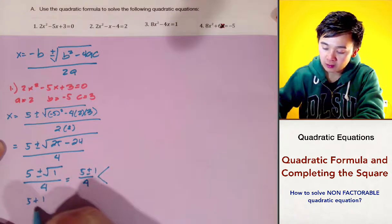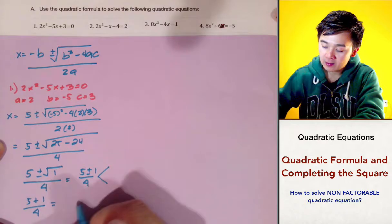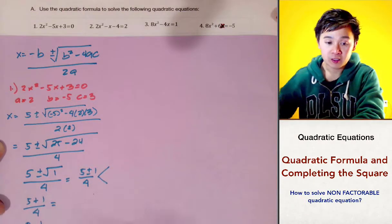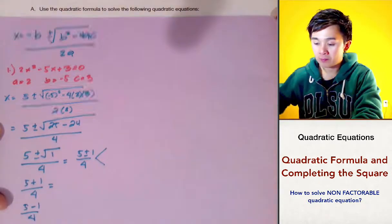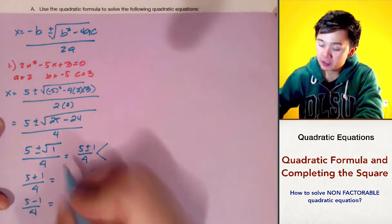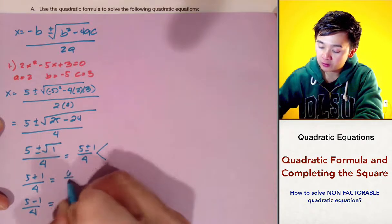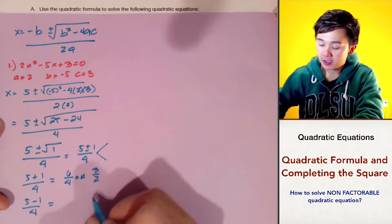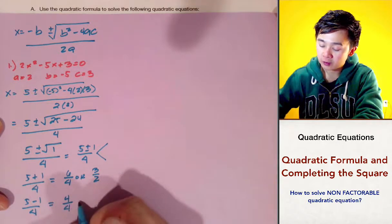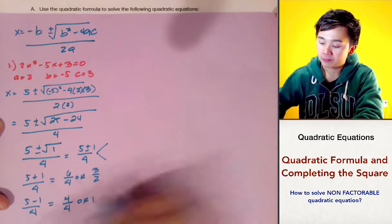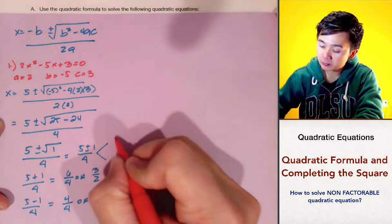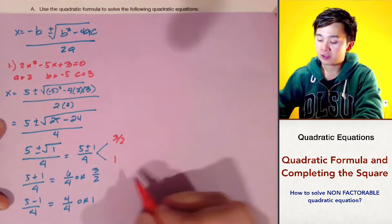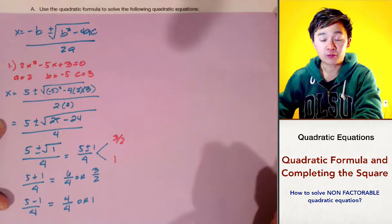So we have 5 plus 1 all over 4 and 5 minus 1 all over 4. That gives us 6 over 4, which simplifies to 3 over 2, and 4 over 4, which equals 1. So the two solutions of our first quadratic equation are 3 over 2 and 1.